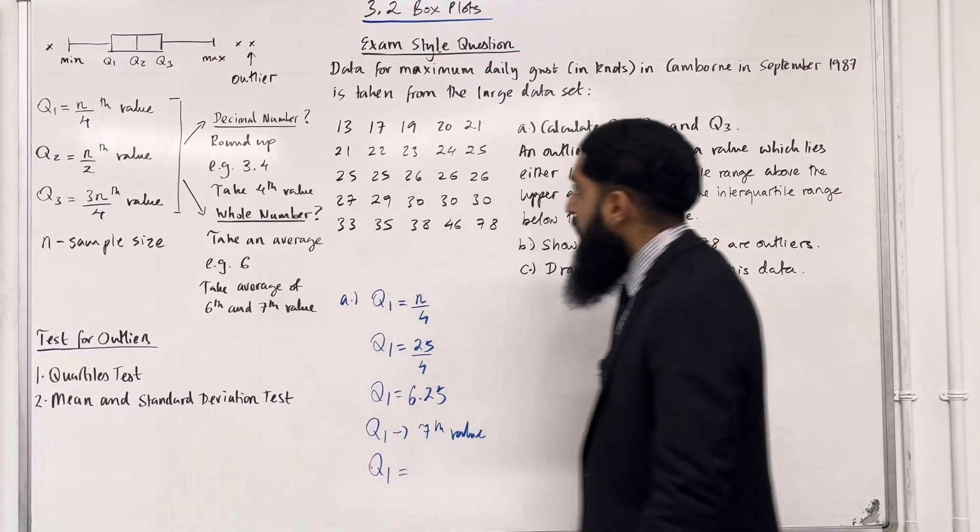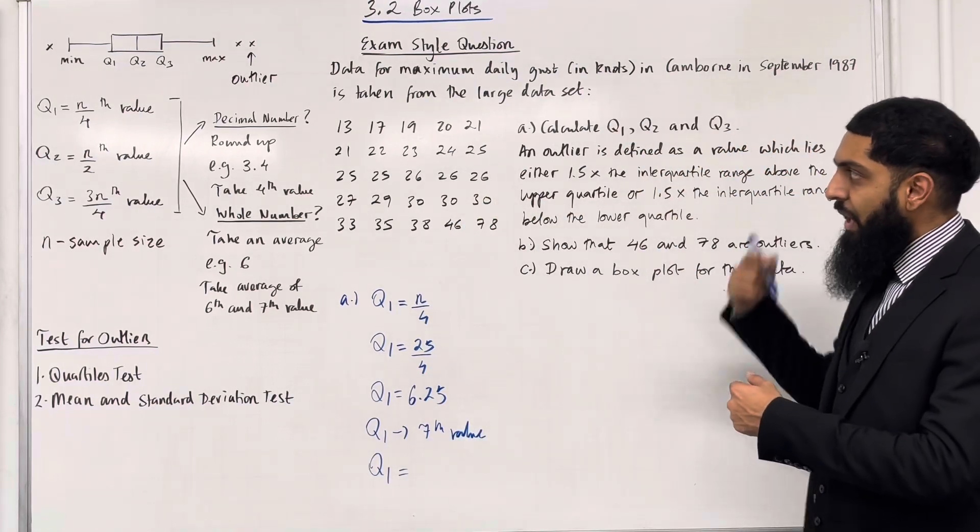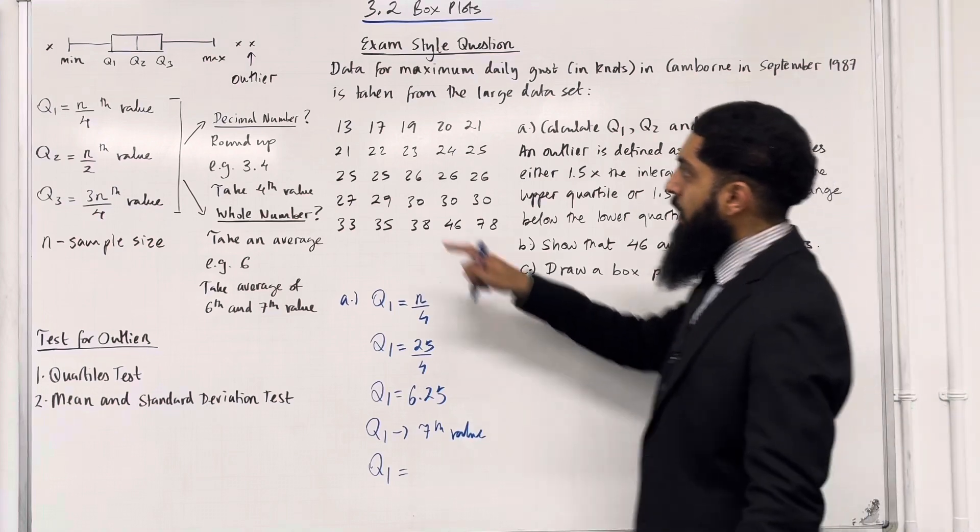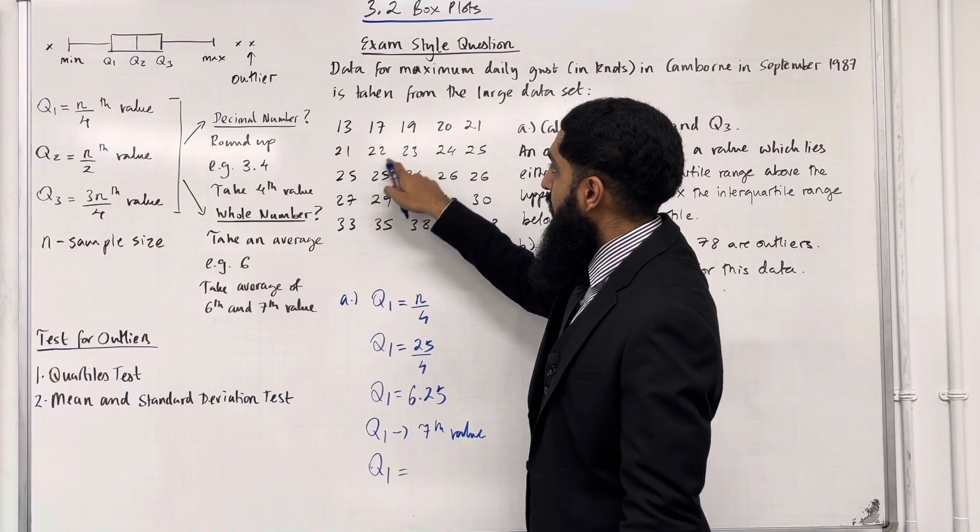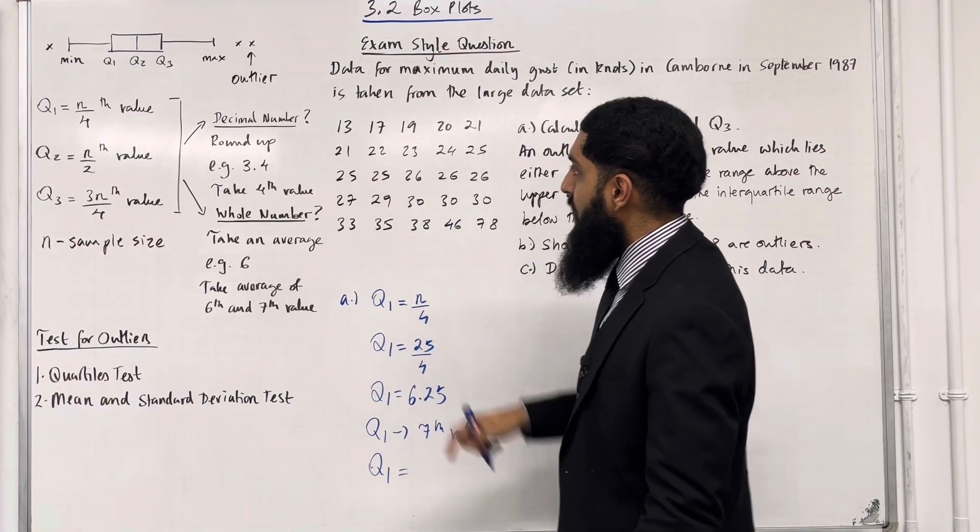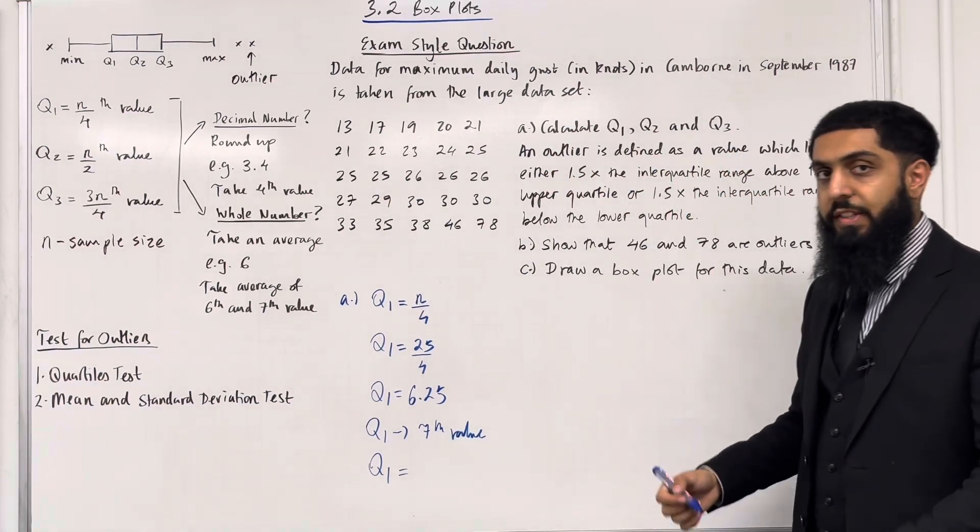Let's go back to the data set. It's already in ascending order. Counting to the seventh value, the seventh data value is 22. Hence Q1 equals 22.